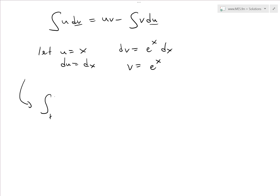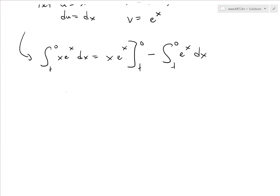Putting this all together, the integral from t to zero of x·eˣ dx equals u·V evaluated from t to zero, which is x·eˣ from t to zero, minus the integral from t to zero of V du, where V = eˣ and du = dx. Evaluating x·eˣ: plug in zero to get zero, minus plug in t to get t·eᵗ. So we have negative t·eᵗ.